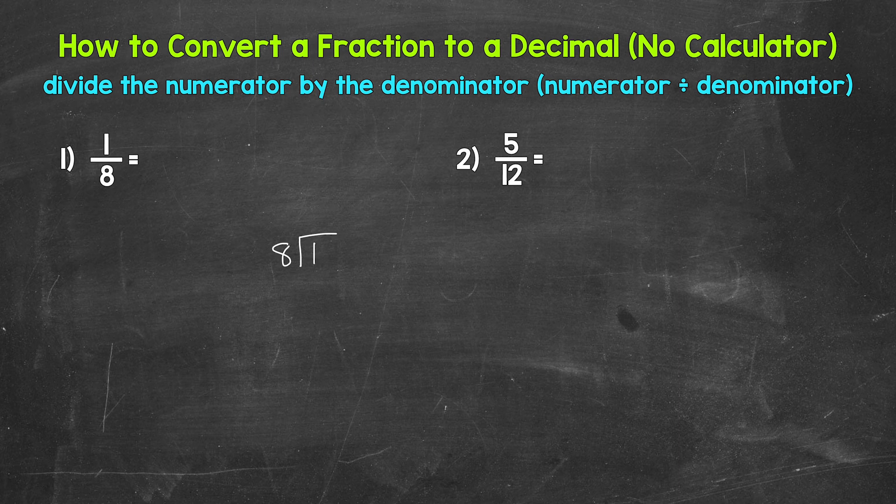We have one divided by eight. As far as one divided by eight, how many whole groups of eight in one? Well, we can't do that. So we need to use a decimal and then a zero in order to work through the division. Once we have that decimal and the zero, we can bring the decimal straight up into the quotient, the answer.